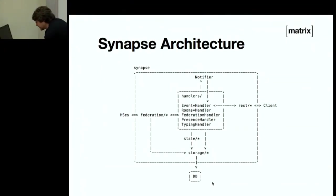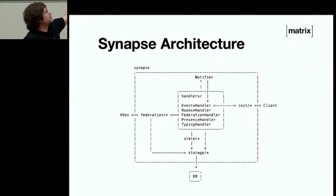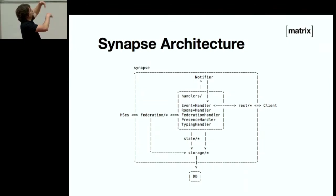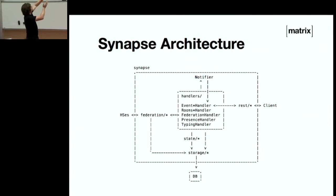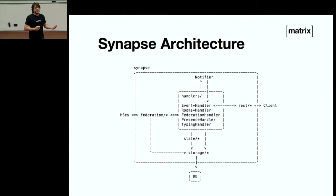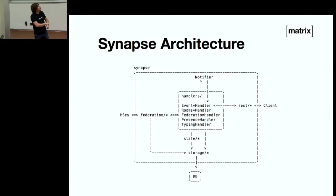The architecture itself is quite straightforward. You've got a database storing all of this — we support SQLite and Postgres. You have a storage layer on top of that. In the center, you've got the main handlers, which handle events and rooms, federation for talking to other servers, presence, typing. On the left-hand side we talk to other home servers via the federation class namespace. On the right-hand side we talk to clients by exposing REST endpoints — to send a message in Matrix, you just PUT or GET to send or receive a message.